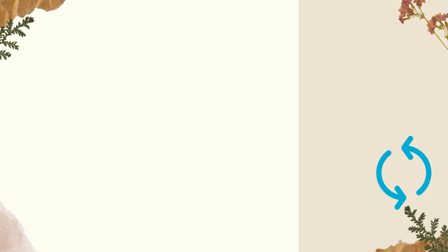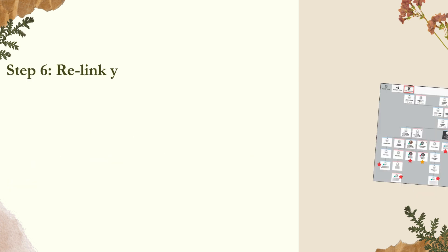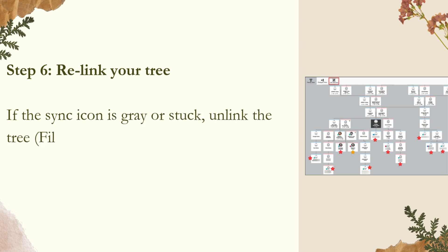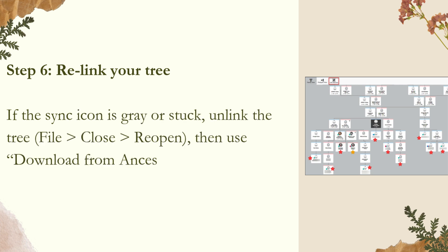Step five: break media changes into batches. If you've made dozens of changes, try syncing after just a few, then do the rest in parts. Step six: relink your tree. If the sync icon is gray or stuck, unlink the tree file, close and reopen FTM, then use Download from Ancestry to relink your local tree.